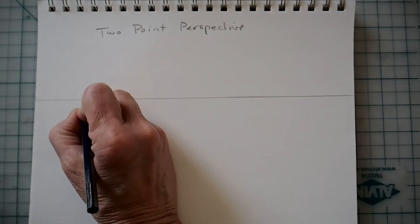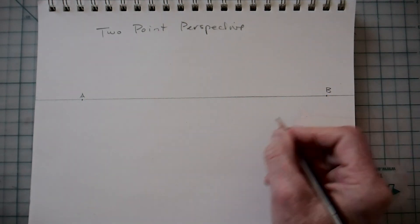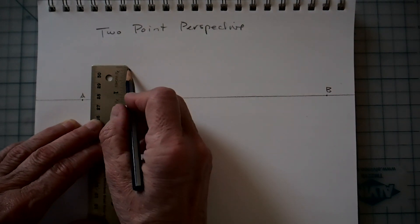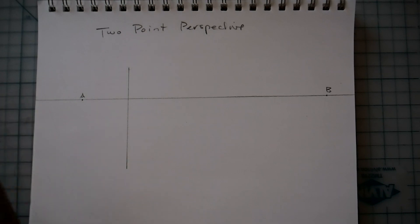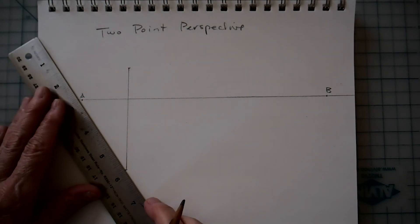That's our horizon line or eye level or eye line. But instead of one point you're going to put two points. Put A and B. Now you're going to at some point along between the two draw a vertical line and that's going to be part of your building that we're going to build.